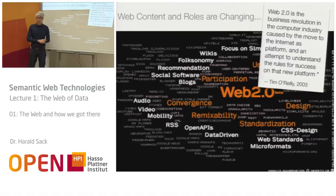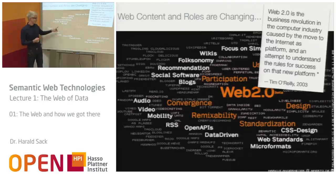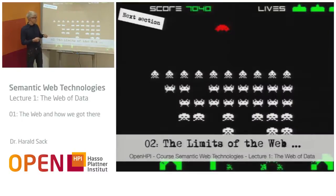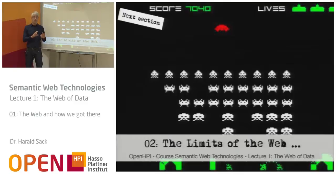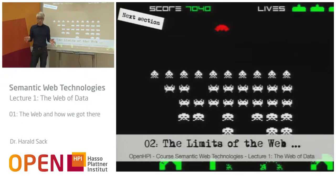So, the web is now at the stage called Web 2.0, but we want to go one step further. To do this, we have to explore the limits of the web — what is the current state of the web, and where are the problems? This will be the subject of the next part of the lecture.